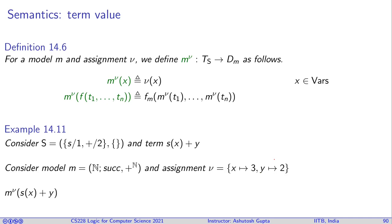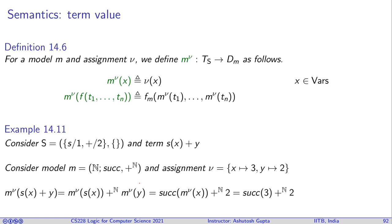To interpret the term s(x + y), we work inside-out. First, x is interpreted as 3 and y as 2. Applying plus gives 3 + 2 = 5. Then applying successor s gives s(5) = 6. So the interpretation of s(x + y) under this model and assignment is 6.